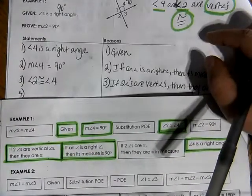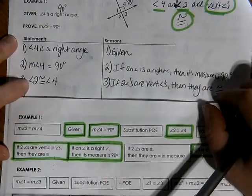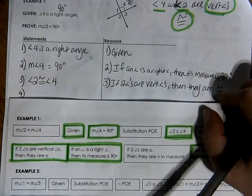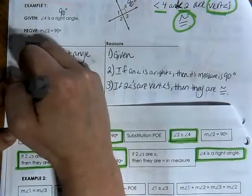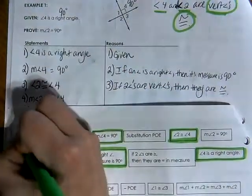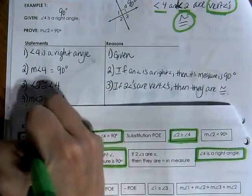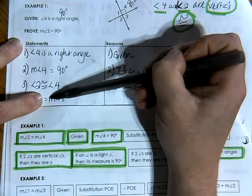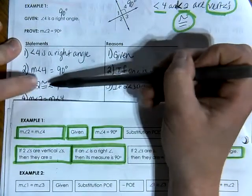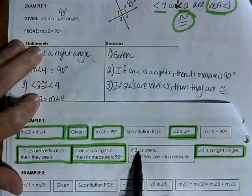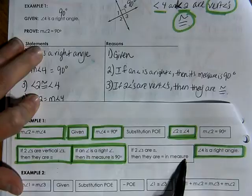And then we can talk about measures. Because these two angles are congruent to each other, we want to eventually have an equal sign at the very end of our proof. So I'm going to write that the measure of angle two has to be equal to the measure of angle four, because if two angles are congruent, then they are equal in measure.